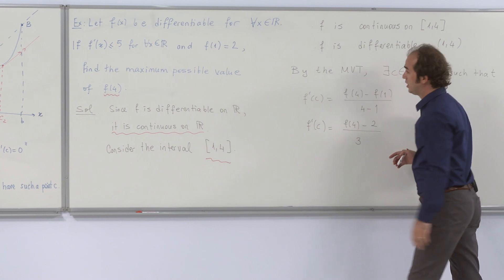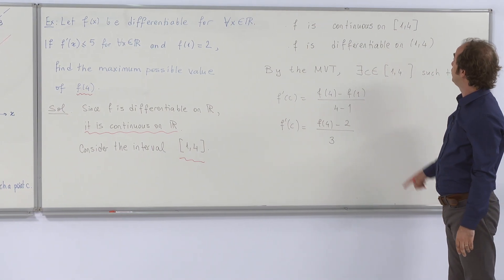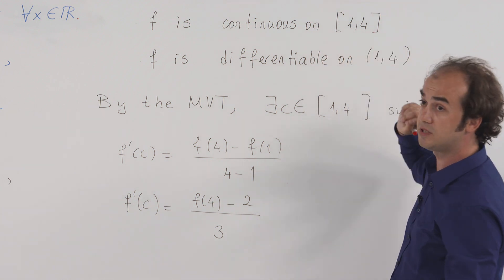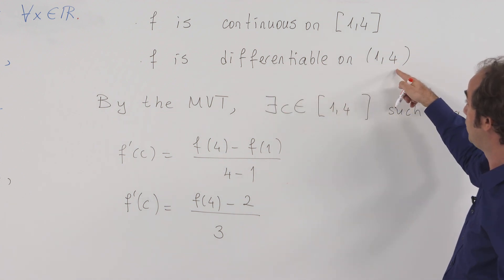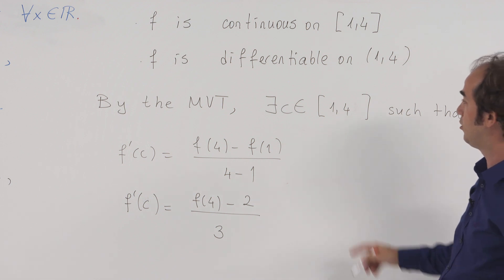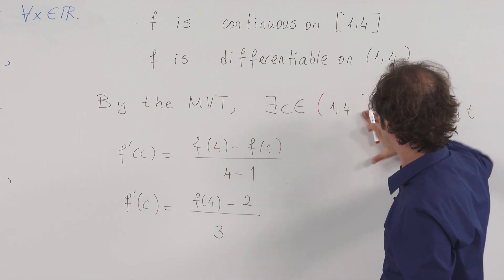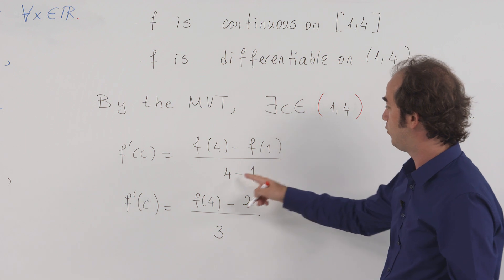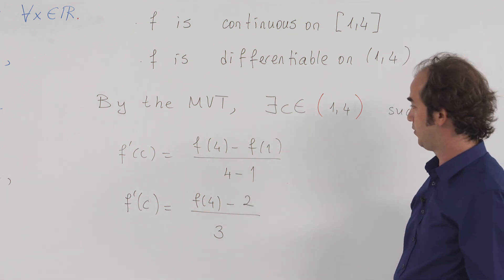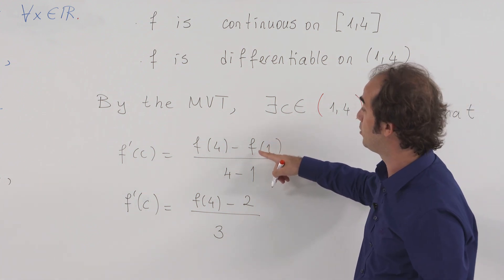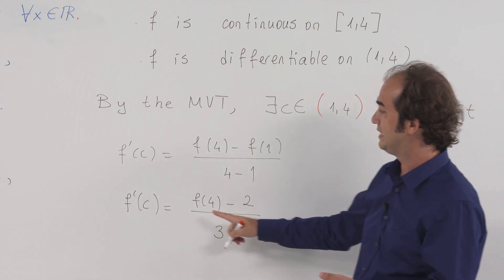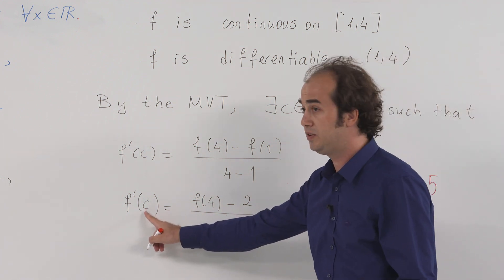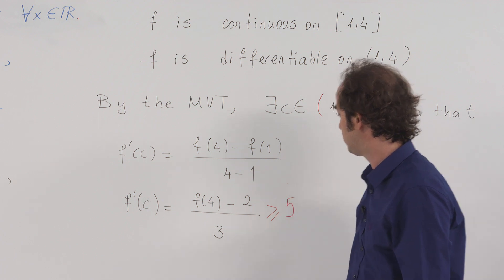Checking the conditions of the mean value theorem on [1, 4]: since f is continuous everywhere, it is continuous on the closed interval [1, 4]. Since it is differentiable everywhere, it is differentiable on the open interval (1, 4). Therefore, by the mean value theorem, there is at least one point c in (1, 4) such that f'(c) equals f(4) minus f(1) divided by 4 minus 1. We know f(1) = 2, and f'(x) ≤ 5 for all x, so f'(c) ≤ 5 as well.